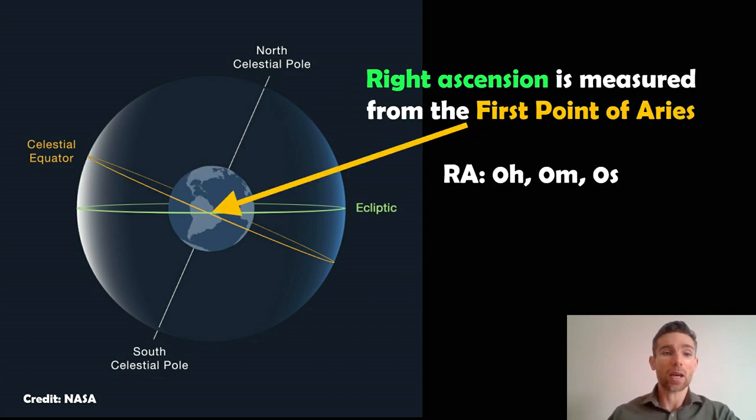At that intersect between the celestial equator and the ecliptic, your right ascension is zero hours, zero minutes, zero seconds. It starts at that reference point there. So that's basically it really.